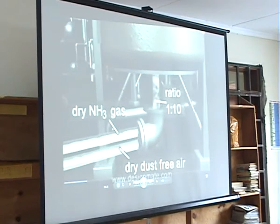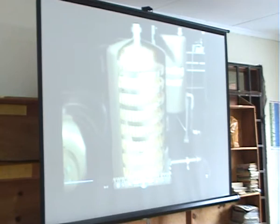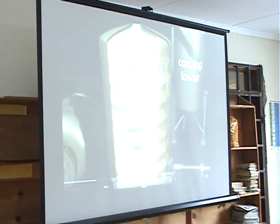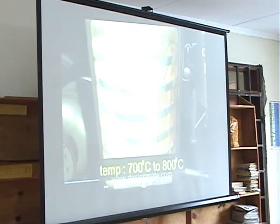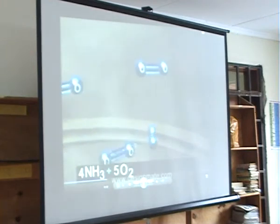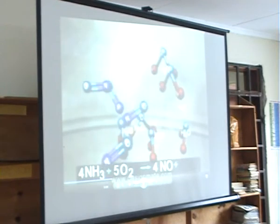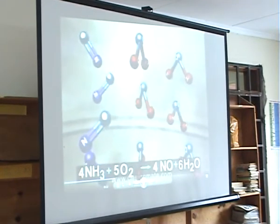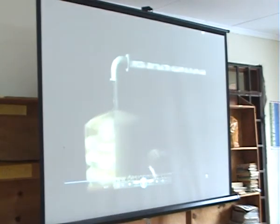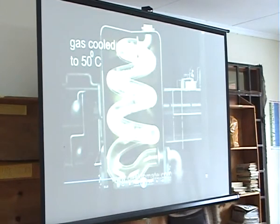A mixture of pure dry ammonia gas and dry dust-free air in the ratio of 1 to 10 is fed into the catalyst chamber. In the presence of platinum gauze at 700 to 800 degrees Celsius, the ammonia is oxidized to nitric oxide. This is an exothermic reaction. The nitric oxide gas is then allowed to pass through the cooling tower and is cooled to 30 degrees Celsius.